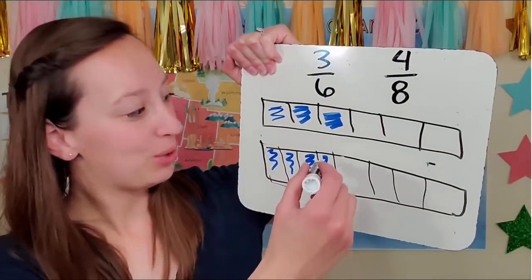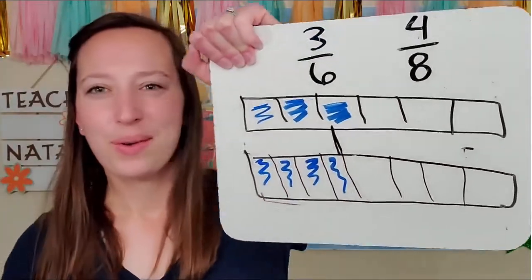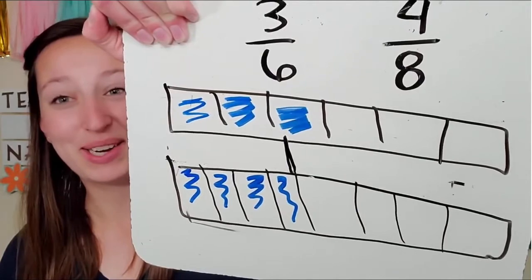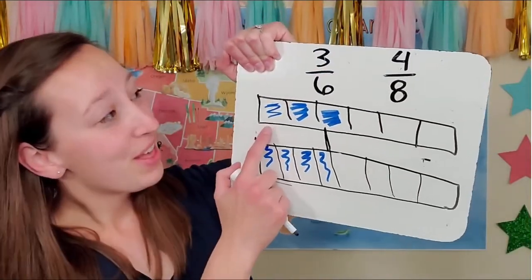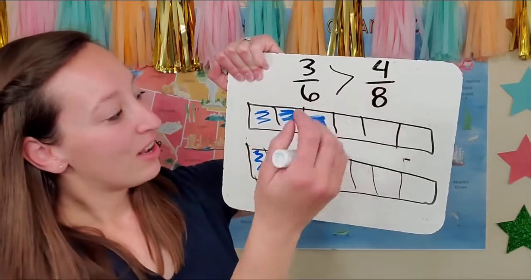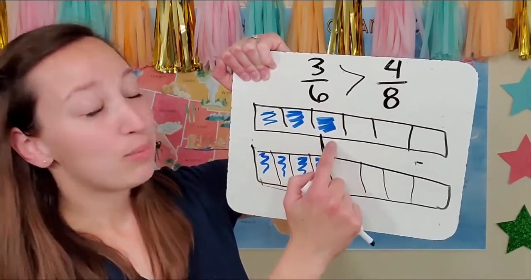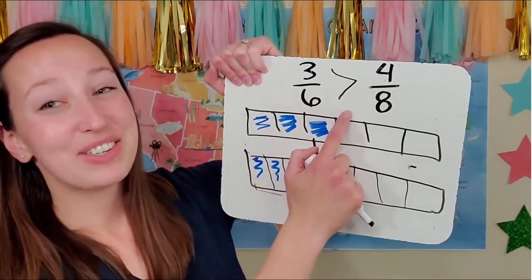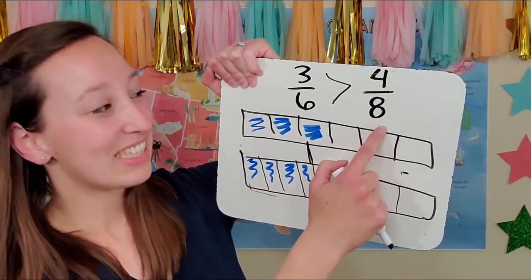This is close. Which fraction is bigger? Three sixths is bigger — more spots are colored in, it is longer. Three sixths is greater than four eighths.